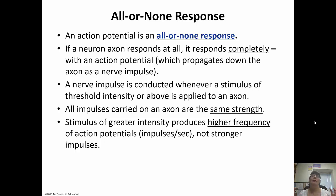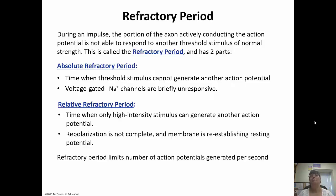Action potentials are all the same strength — it's just a matter of how often they're sent as opposed to their strength. During an impulse, there is a portion actively conducting the action potential that is not able to respond to another threshold stimulus. This is called the refractory period — while it's responding, it can't respond to another stimulus.